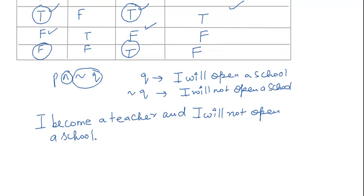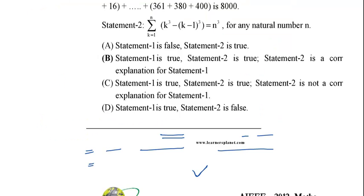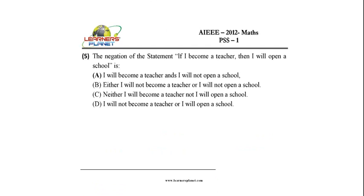Let's check which is the correct option. 'I will become a teacher and I will not open a school' — that is statement A, so the answer to this question is the first option, which is the correct one.